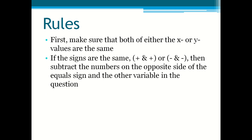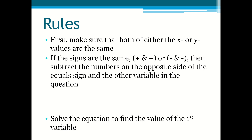If the signs are the same — so add and add, or minus and minus — then you subtract the numbers on the opposite side of the equals and the other variable in the question. But if the signs are not the same — so you have add and minus, or minus and add — then you add the numbers on the opposite side of the equal sign and the other variable in the question.